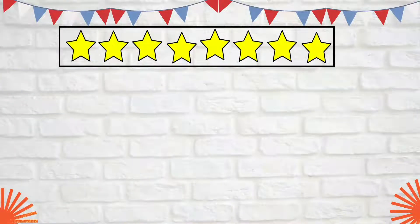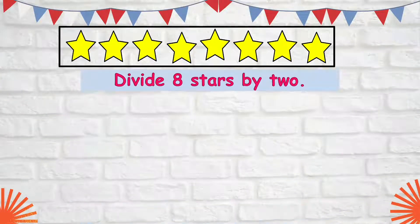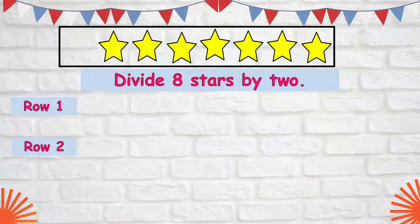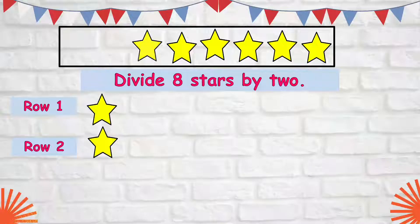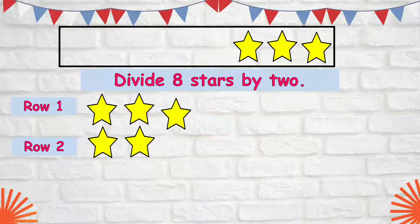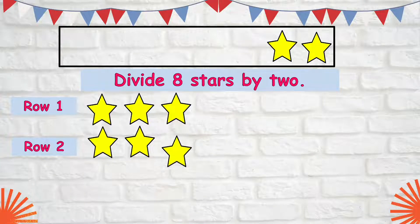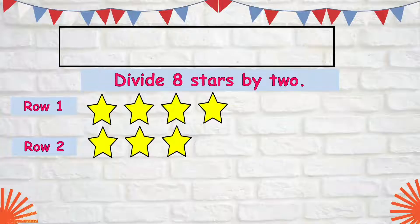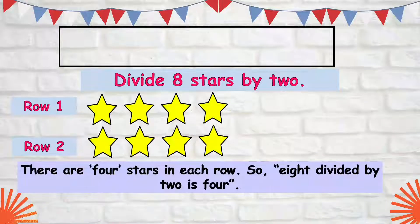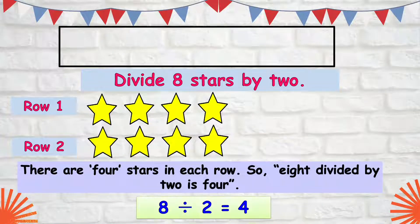We can also use rows to divide these 8 stars. We have row 1 and row 2. Let's distribute these 8 stars to the 2 rows until they have the same number of stars. Each row has 4 stars. So 8 divided by 2 is 4.